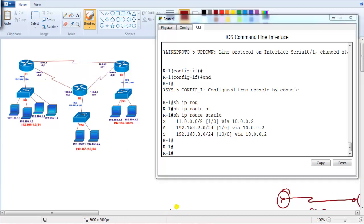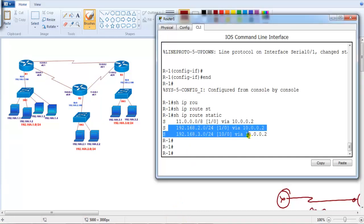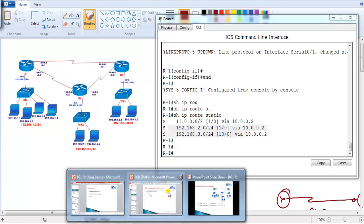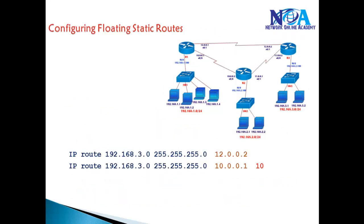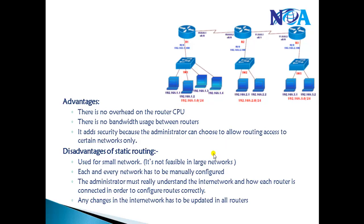I only configured this on Router 1 in my scenario; you can go to Router 2 and Router 3 and configure the same to verify reachability. This way we can have redundant links. Normally this is something automatically done by dynamic routing protocols, which is why we generally prefer to use dynamic routing protocols. One of the major drawbacks with static routing is that it's only applicable for small-size networks where you have to manually configure routes for each and every destination.